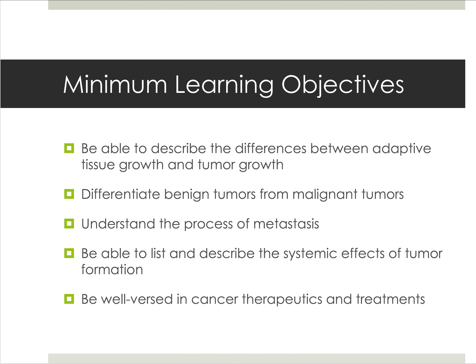Going forward, the minimum learning objectives — which means if you know these things at minimum, you are going to get a pretty average grade on the exam. Ideally, if you know everything included on the review sheet and read the chapter, you will know everything about neoplasia and do your A material.